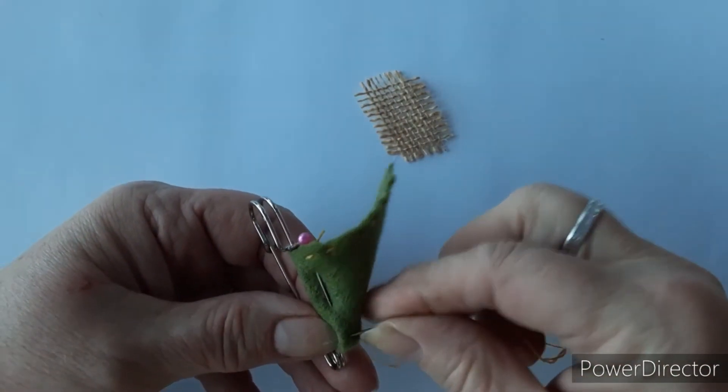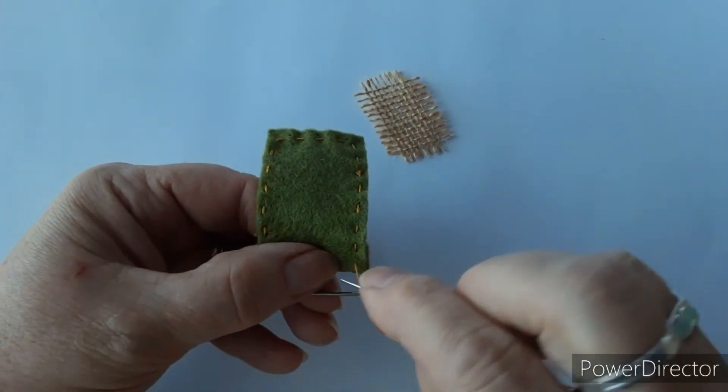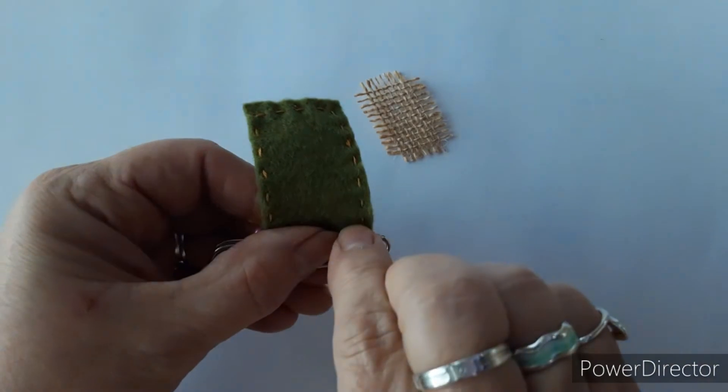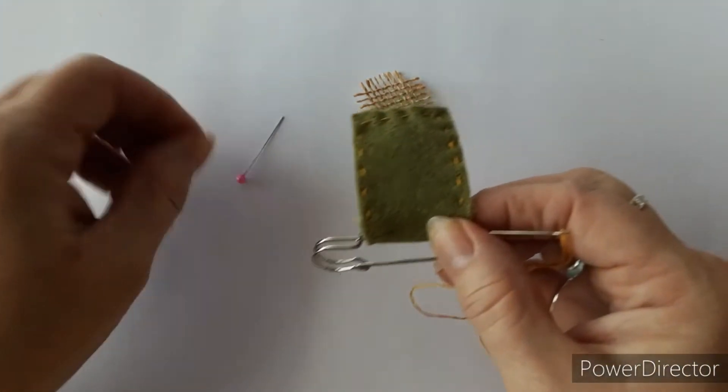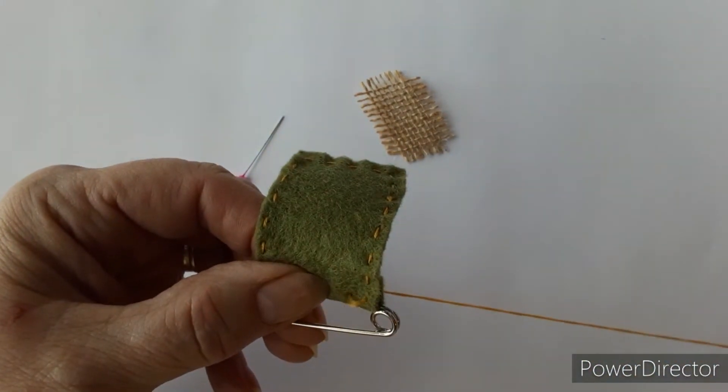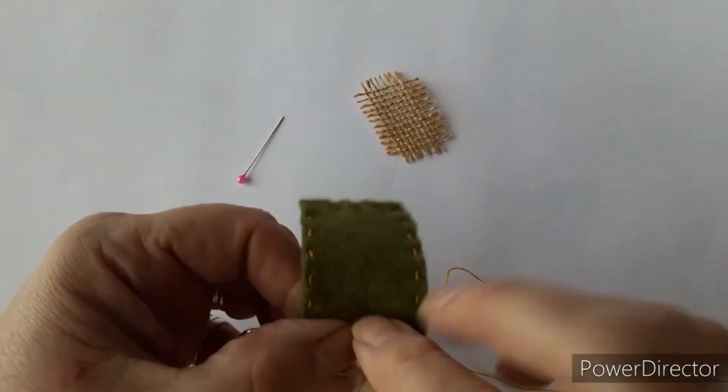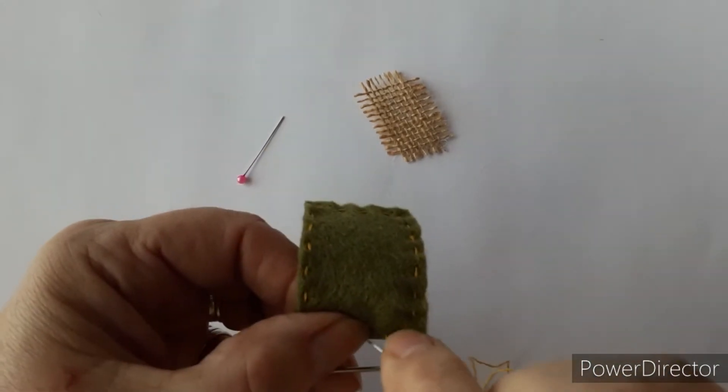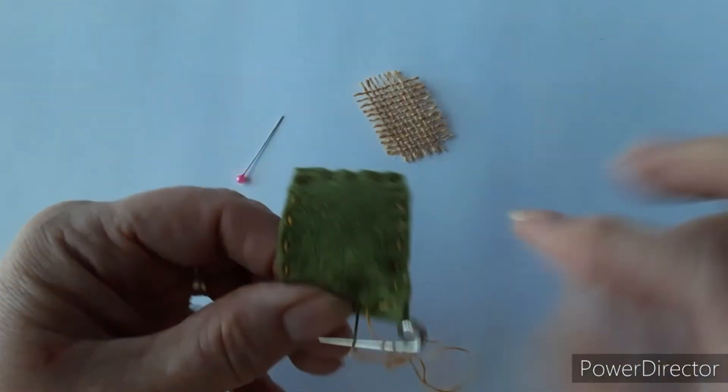Now along this top edge, work your way along with your stitches. Take out the pin, don't need that now. Come through the back. And stitch along until you get to the last corner along the top.